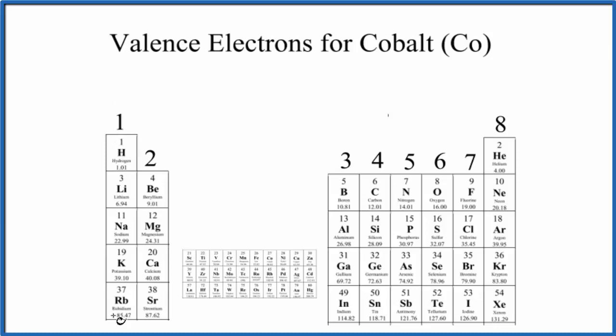Group 1 has one valence electron. Elements in group 2 have 2. Then in general chemistry, we skip over these transition metals, also called the d-block elements. We go to group 13 through 18, which have 3, 4, 5, 6, 7, and 8 valence electrons.